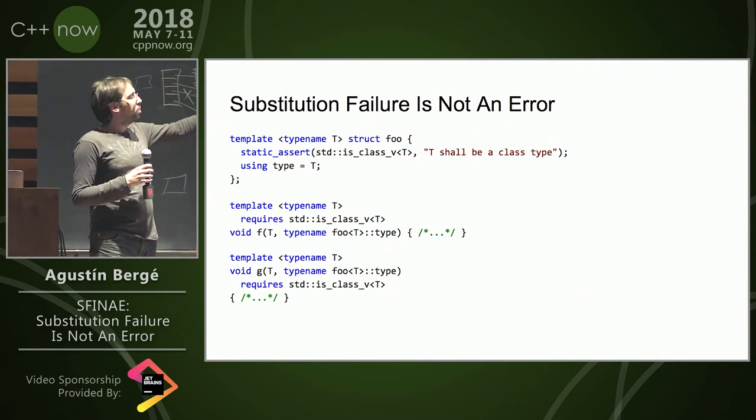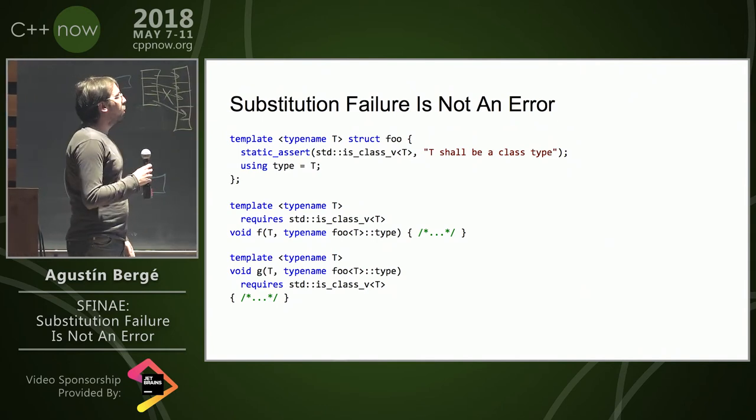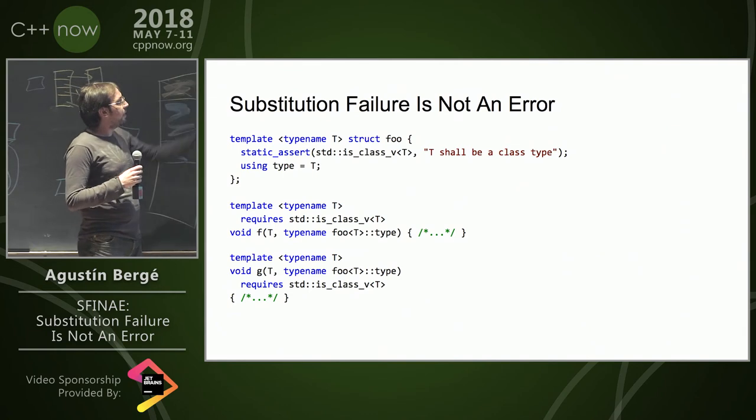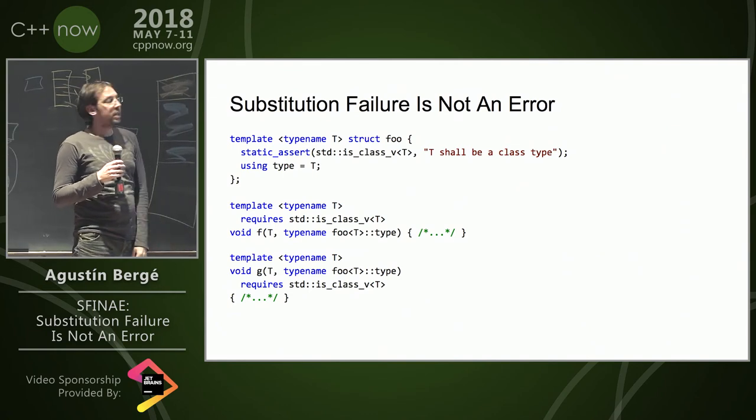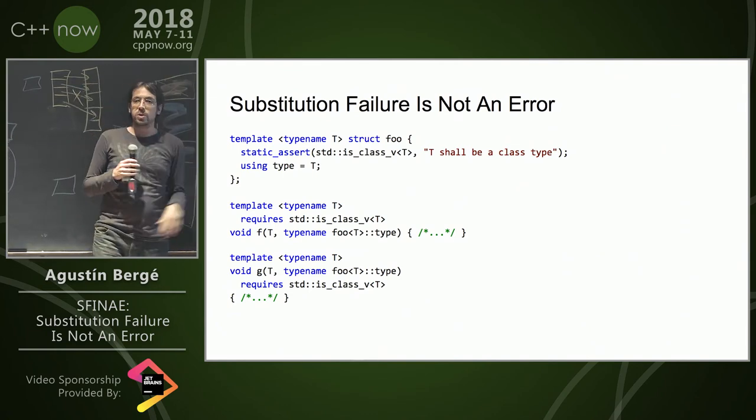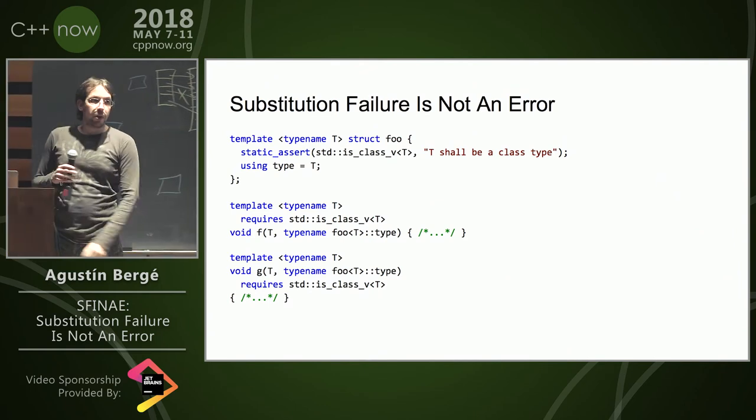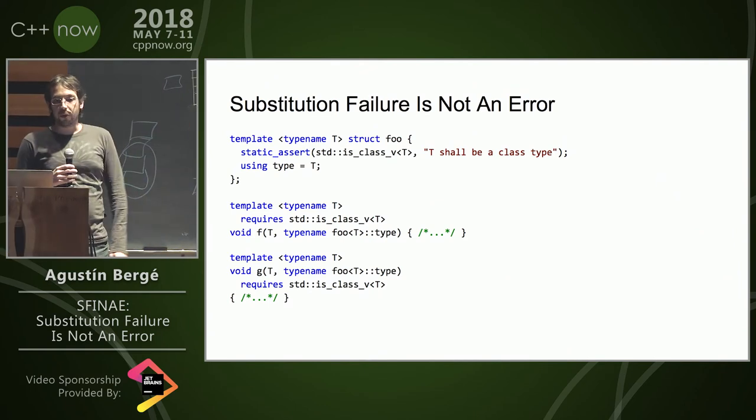Now we want these two to work the same, so what happens here is that neither of these functions is SFINAE-friendly, because we first perform substitution, and we only check the constraints after we have performed substitution.